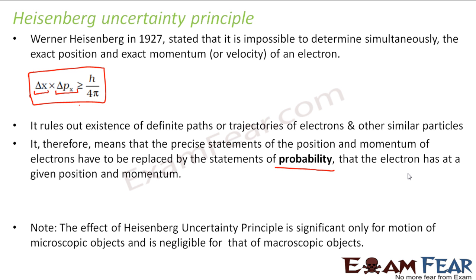The effect of Heisenberg's uncertainty principle is significant only for the motion of microscopic objects and is negligible for that of macroscopic objects. We have spoken about all these things in the lesson on dual nature — why de Broglie's theory and Heisenberg's theory apply for microscopic objects and not for macroscopic objects.